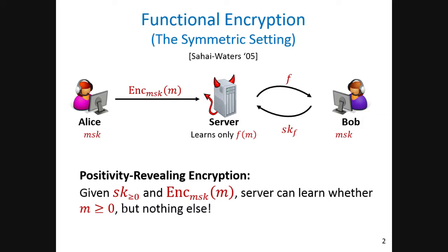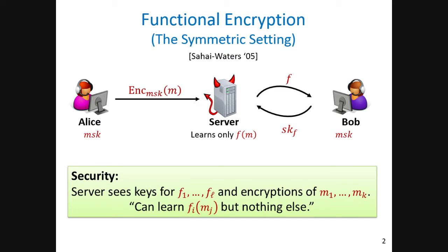For example, one very nice application is that you can publish your database on some server, encrypted, and at some later time you can give the server a key for a function that allows it to reveal whether the messages are non-negative or not. More generally, we can allow the server to learn a bunch of functions F1 to FL, given encryptions of M1 to MK, and the server will be able to know any F on any M, and nothing else.